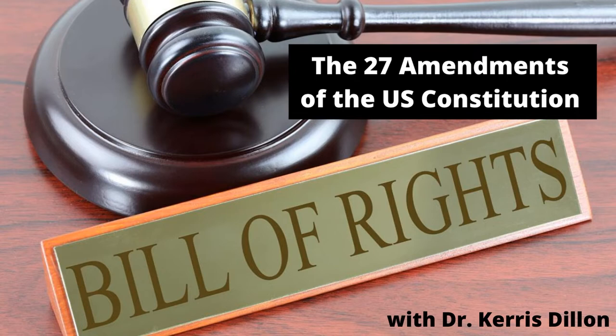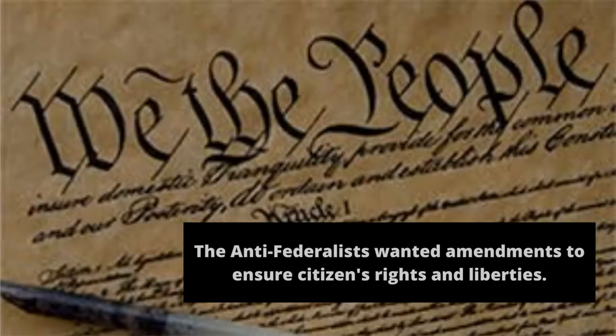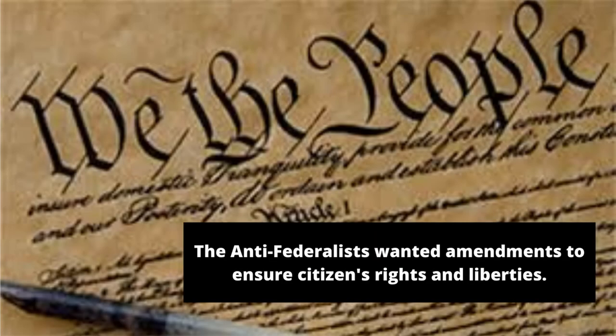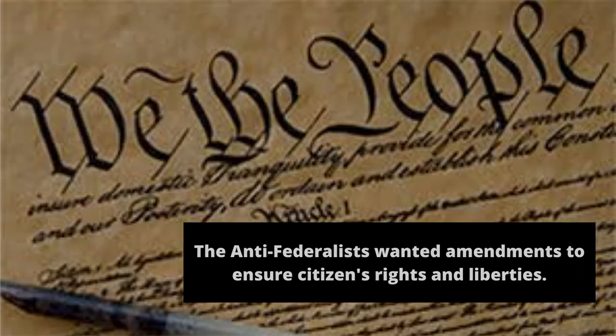In our last video, we covered the U.S. Constitution and put it into really easy terms. Today, we're going to take a look at the 27 amendments that have been made to the U.S. Constitution. In order for the Federalists to gain the ratification of the U.S. Constitution by the last couple of states, the Anti-Federalists wanted amendments to be added. The Bill of Rights are considered the first 10 amendments to the Constitution, added in 1791 to ensure the rights and liberties of all citizens of the United States.